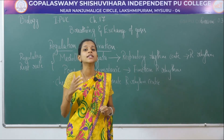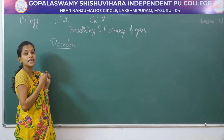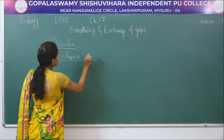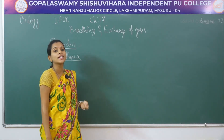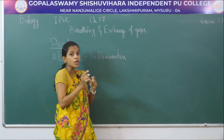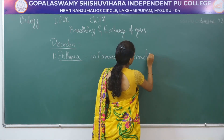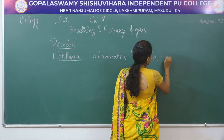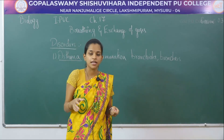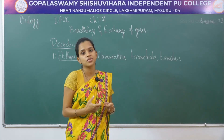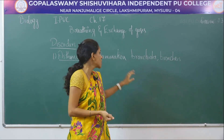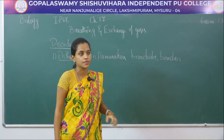Next we study some disorders of respiration. The first disorder is asthma. Asthma means difficulty in breathing which leads to wheezing problems due to inflammation in the bronchus and bronchioles. The bronchus is the main branch separated from the trachea with primary, secondary, and tertiary divisions; the further branches are bronchioles. Due to inflammation in these respiratory parts, there is difficulty in breathing causing wheezing.